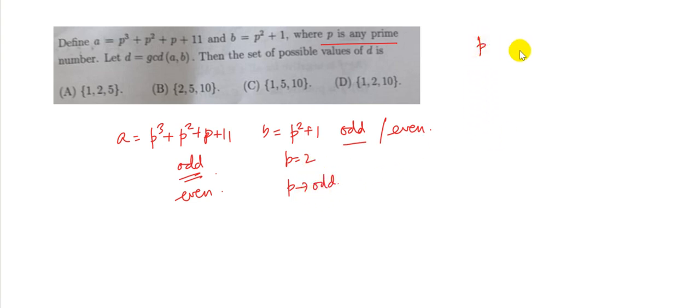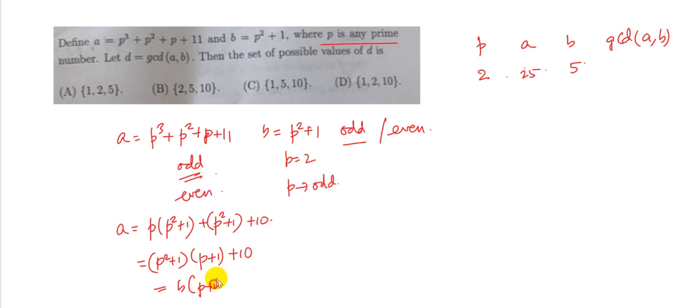Now we just calculate the values of p, a and b and the GCD of a and b. So if p is 2, b is 5 and a is 25. So we can actually write a as p into p square plus 1 plus p square plus 1 plus 10 or p square plus 1 into p plus 1 plus 10 or b into p plus 1 plus 10. So this will make the calculation easier.